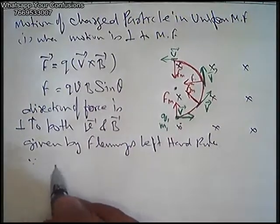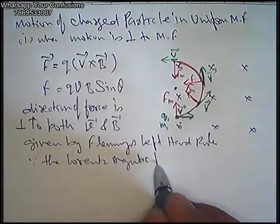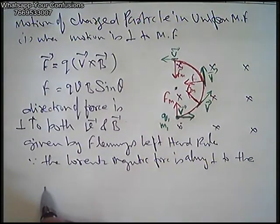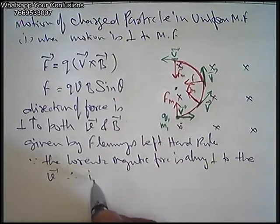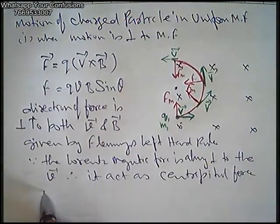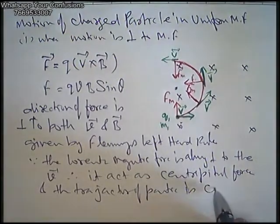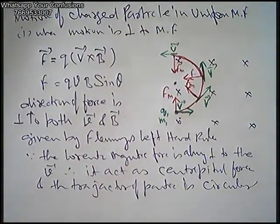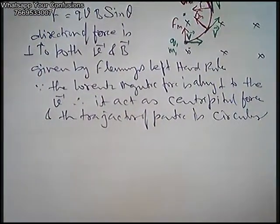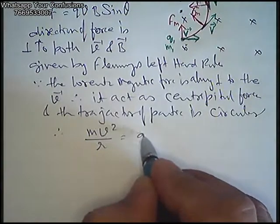Since the Lorentz magnetic force is always perpendicular to the velocity vector, it acts as centripetal force, and the trajectory of the particle is circular. For circular motion the centripetal force is provided by the Lorentz magnetic force: mv²/r = qvB sinθ.